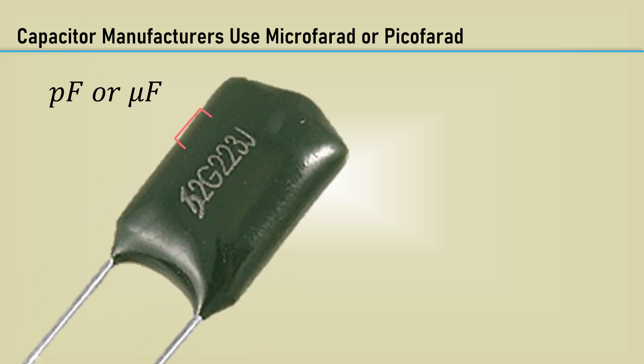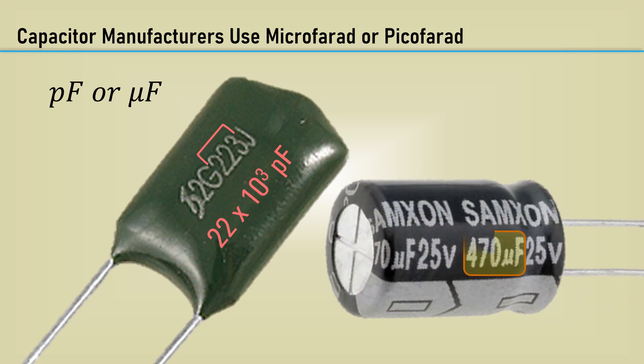the code 223 is 22 times 10 to the third picofarads. And here, simply labeled microfarads. It could have been marked as .47 millifarads.